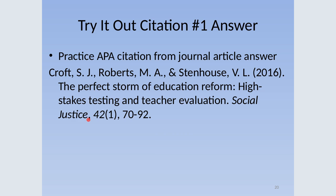Here's what your citation should look like — starting with the author's last name, initials, first name, middle initial, and all authors written out, then the date, then the article title. Again, not capitalizing — except you will capitalize the first word after a colon in the article title or journal title. Social Justice is your journal title, which is in italics and completely capitalized. Then you have your volume number in italics and your issue number with your page numbers. We're going to give one more try.